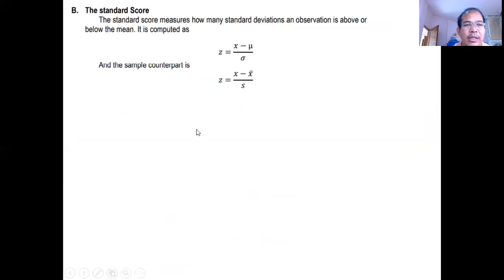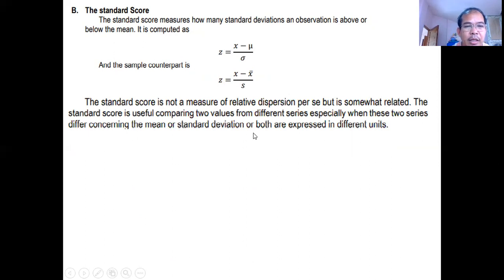Standard score. Ang standard score measures how many standard deviations an observation is above or below the mean. Computed as is using this formula. If the data is population, use this formula. If the data is sampled, use this formula. But, same concept. Ang standard score is not a measure of relative dispersion. But, it is somewhat related.